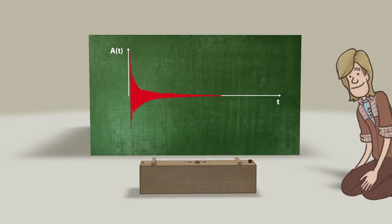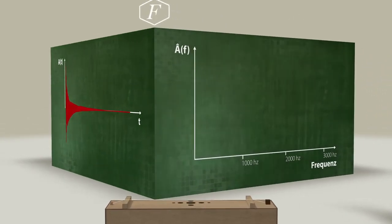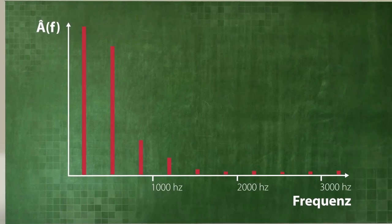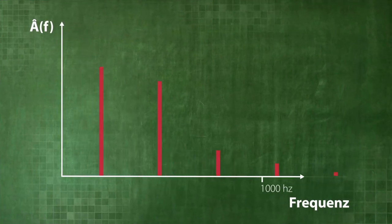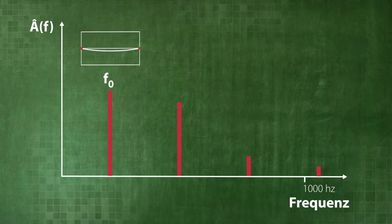The spectrum of the vibrating string consists of multiples of the fundamental frequency F0. These specific modes of vibration can be classified according to the number of nodes.